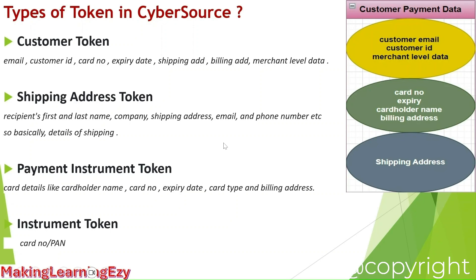As discussed in the previous slide, when the merchant submits the customer payment data to the payment gateway and tokenization is enabled, the payment gateway will create all these different types of tokens: customer token, shipping address token, payment instrument token, and instrument token. Each token will have its corresponding data.